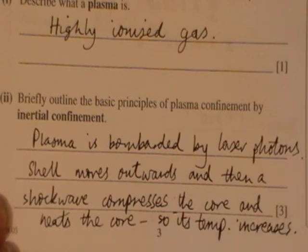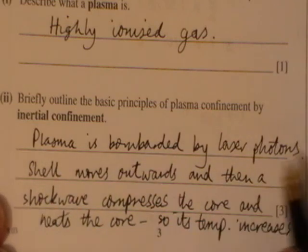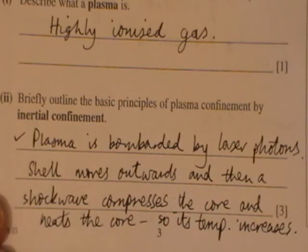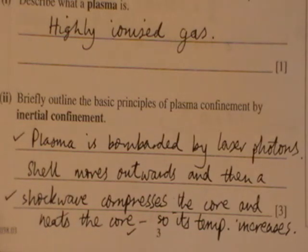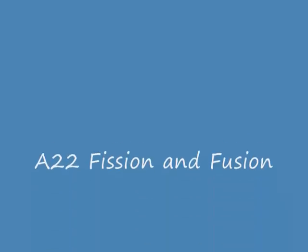If you look in the mark scheme, what you'll see is that plasma bombarded by laser photons, that's what the examiner's looking for, the first mark, and then shock wave compresses the core for the second mark, and that the core gets heated up for the third mark. So, those are the three areas that you'll get your marks for.